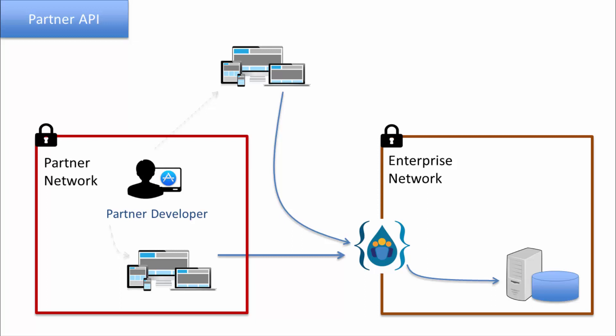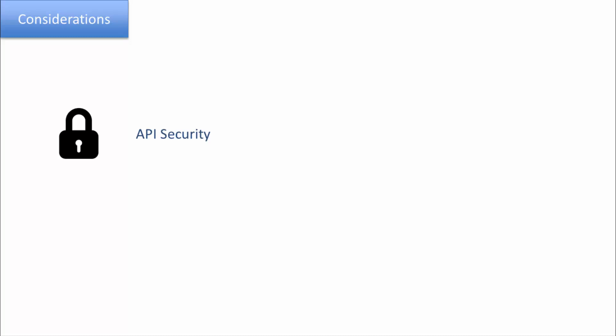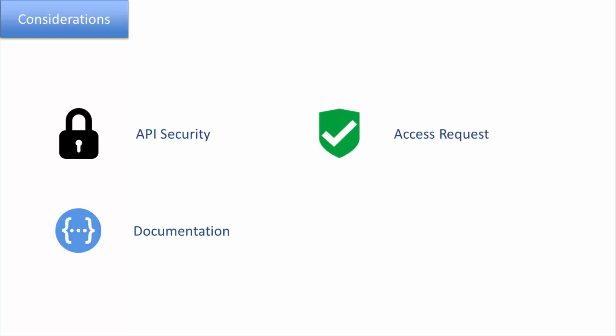There is no difference in the coding or design of the three types of APIs. The difference is in how you manage them. In this lecture, I'll cover four aspects that you as the API owner need to think through for each type of API your organization plans to expose: API security, documentation of the API, access requests for the APIs, and SLA management.